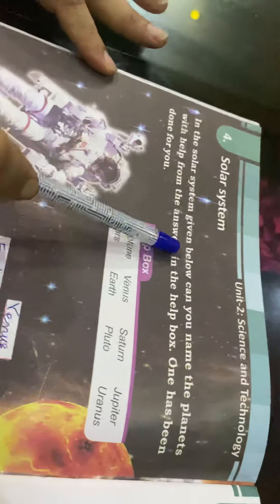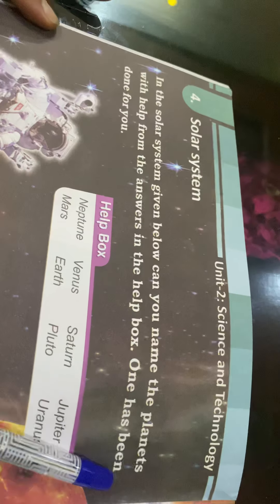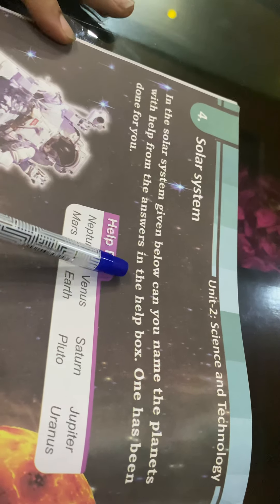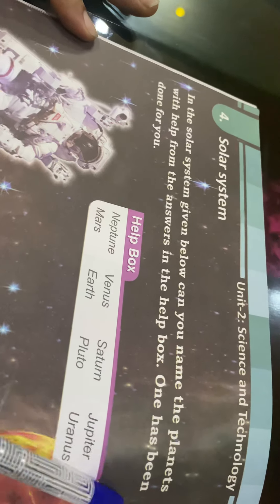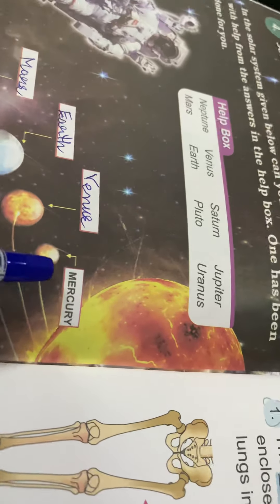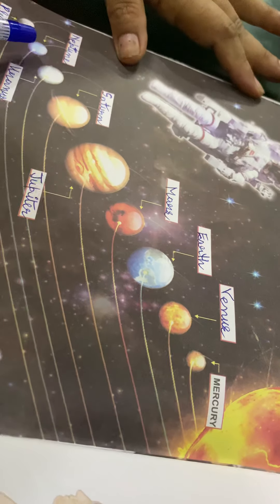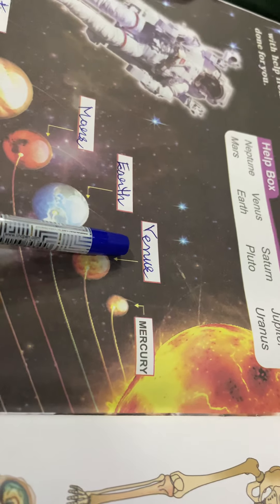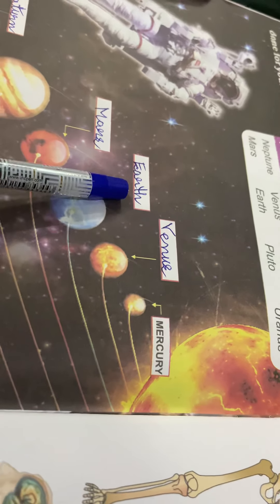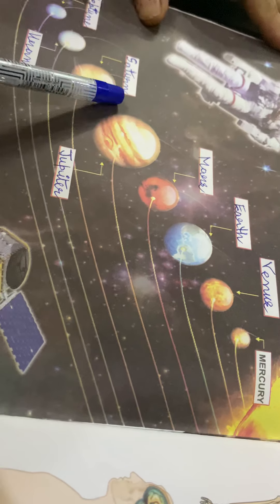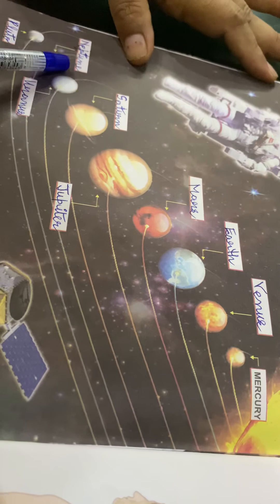In the solar system given below, you can name the planets with the help from the answers in the help box. One has been done for you. This is the sun and these are the other planets: Mercury, Venus, Earth, Mars, Jupiter, Saturn.